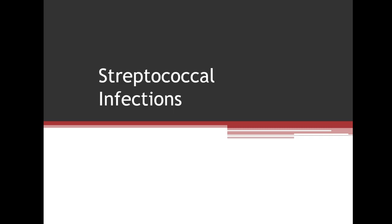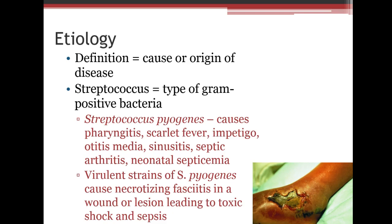Now we'll look at specific bacteria and parasites. Streptococcal infections are caused by Streptococcus pyogenes, a group A gram-positive bacterium. It causes pharyngitis, scarlet fever, impetigo, otitis media, sinusitis, septic arthritis, and neonatal septicemia. Very virulent strains can even cause necrotizing fasciitis, also known as flesh-eating bacteria.